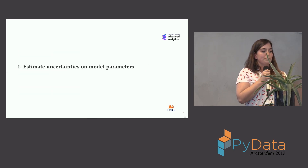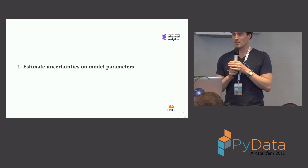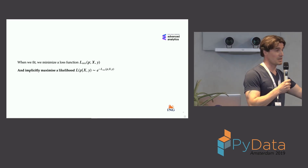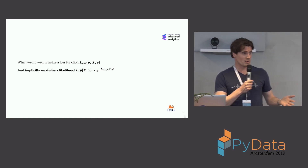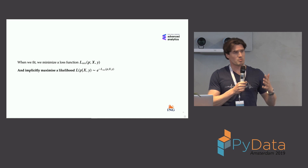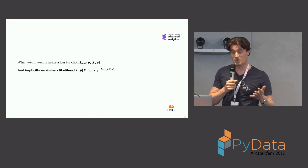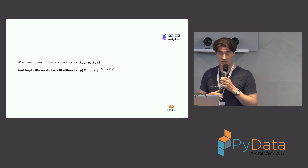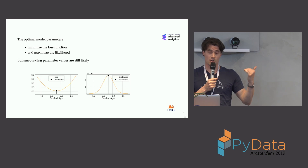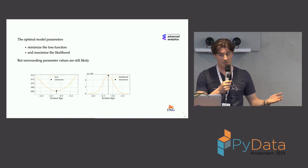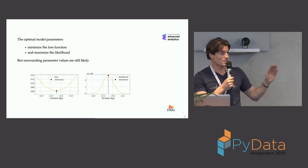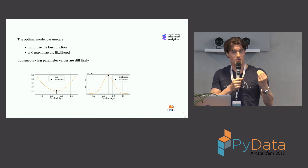Now that we've trained a model, let's get the uncertainties on the parameters. Behind the scenes, when we train a model we're minimizing a loss function. It's important to realize that when you minimize a loss function, you're implicitly also maximizing likelihood, and this is something we use in our estimation of uncertainties. The model parameters — the bias and the slope — are the ones that minimize the loss function, and at the same time they maximize the likelihood.